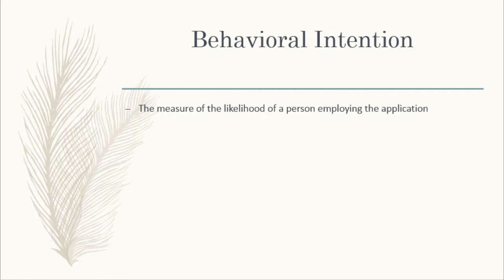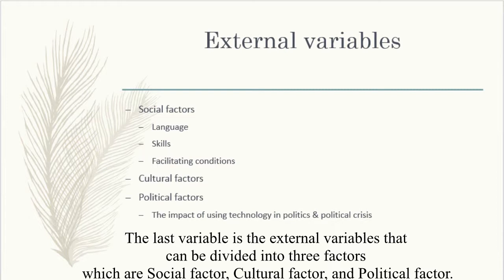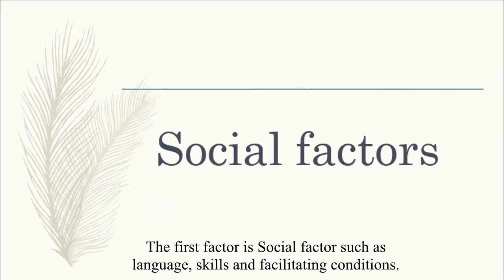The fourth variable is Behavioral Intention. It measures the likelihood of a person employing the app or the system. The last variable is the external variables, which can be divided into three factors: Social Factor, Cultural Factor, and Political Factor.